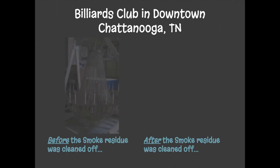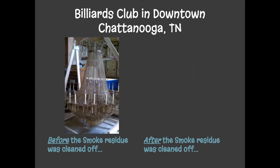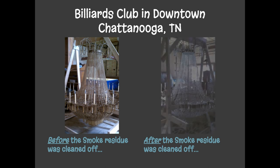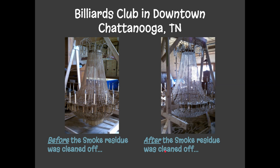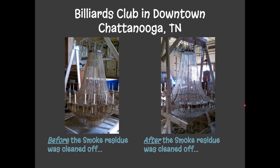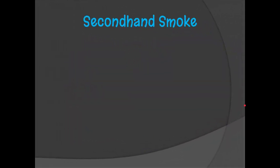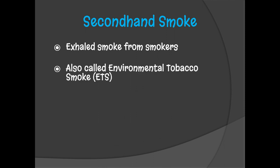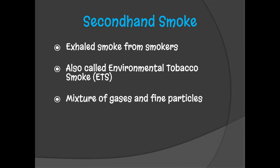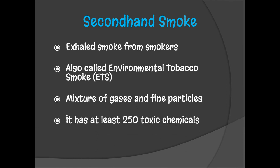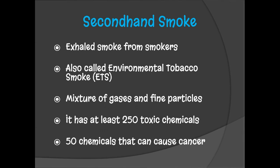This is downtown Chattanooga at a billiards club — when a law came into effect banning smoking there, they cleaned a chandelier and this is the smoke residue that came off it. That's a pretty disgusting amount of tar and smoke residue. Secondhand smoke is also referred to as environmental tobacco smoke. You breathe it in from other smokers when they exhale, and it has a mixture of gases and fine particles with at least 250 toxic chemicals, 50 of which can lead to cancer.